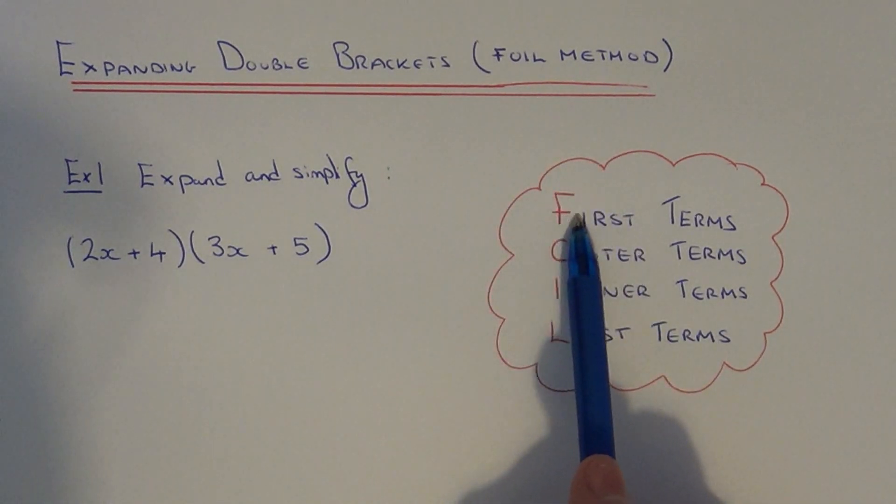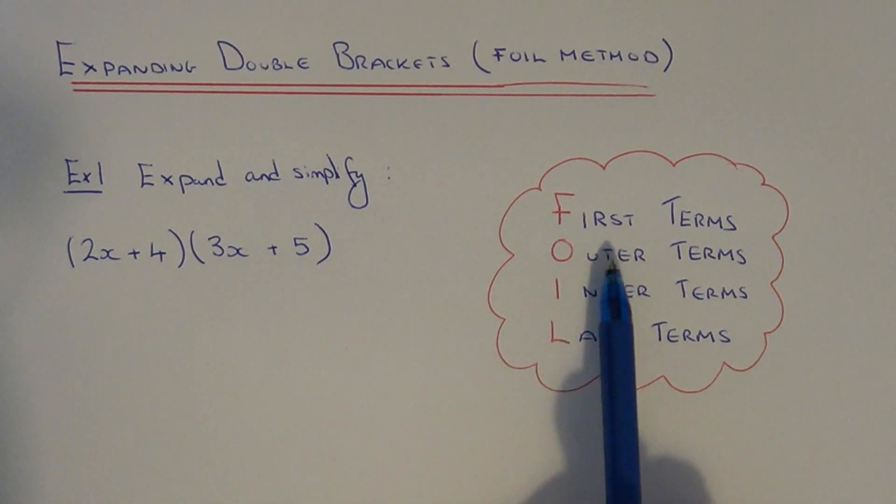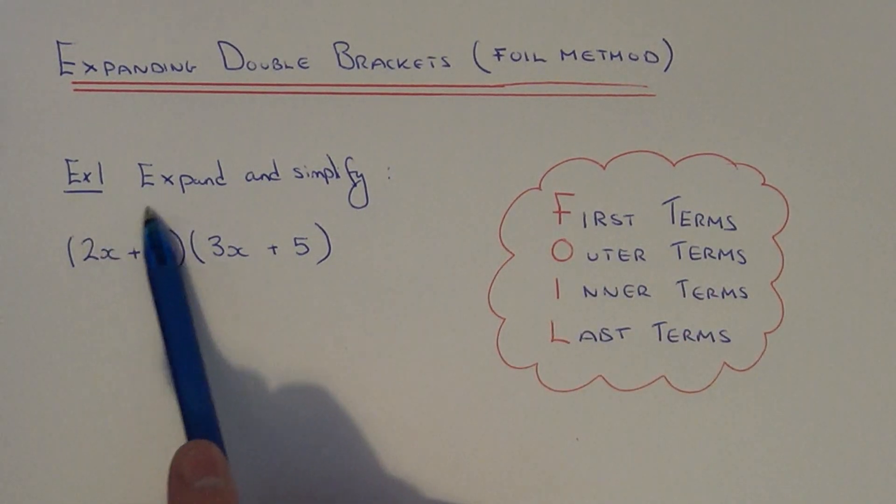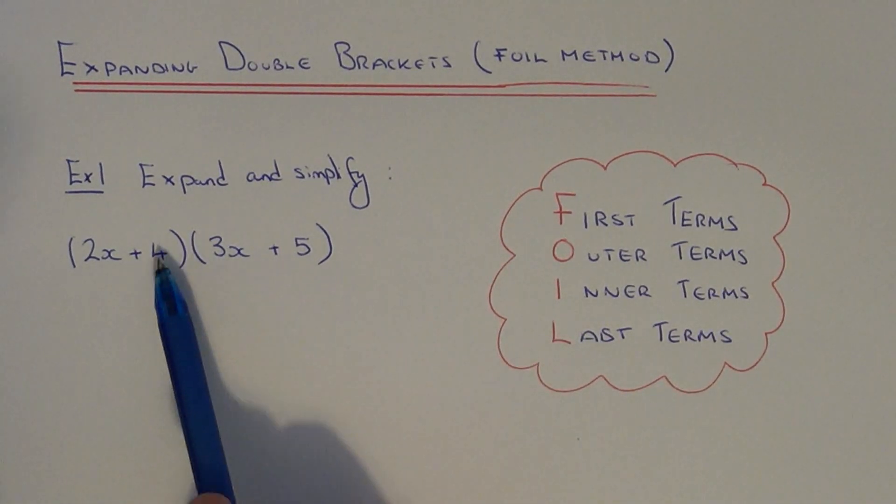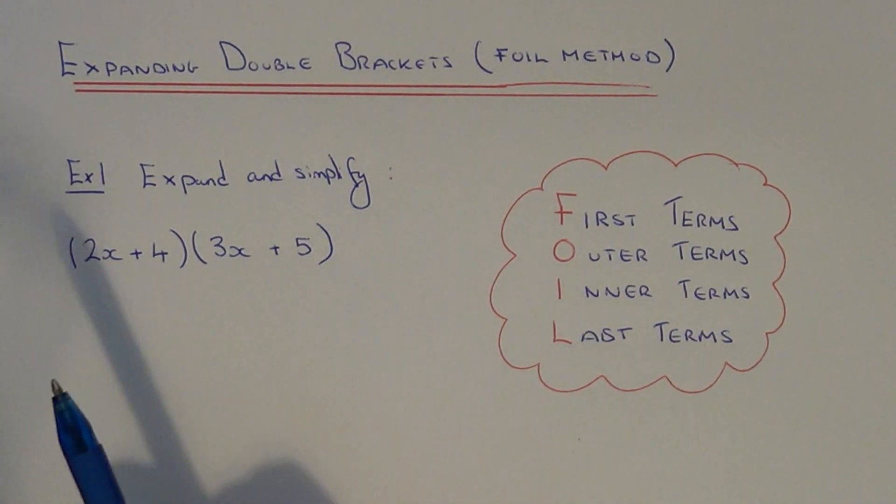The first thing we have to do is multiply the first terms in each bracket together. Then we multiply the outer terms in each bracket. Then we multiply the inner terms in each bracket. Then finally the last terms in each bracket.